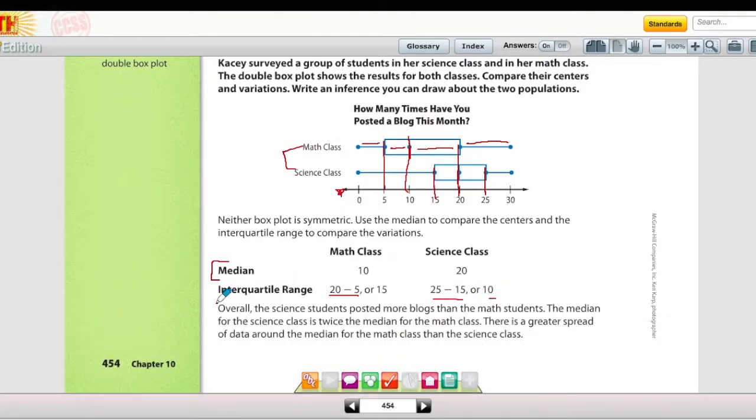Right here I want you to pay attention to how you can write an inference about the two populations. Overall, the science students posted more blogs than the math students. We have 20 versus 10, that makes sense. The median for the science class is twice the median for the math class, 20 is twice 10. There is a greater spread of data around the median for the math class than the science class. Remember that interquartile range, that 15 is larger than 10. So those are all statements that you can make about the two populations.